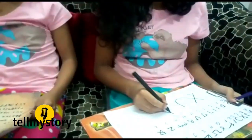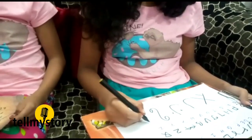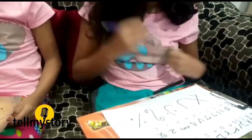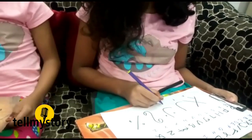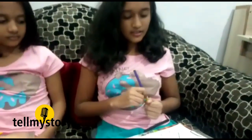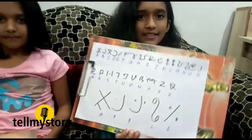Then you can frame sentences and write words. For example, I'll write 'apples.' This is how you write apples. If you learn the alphabets, then you can learn how to write sentences and words.